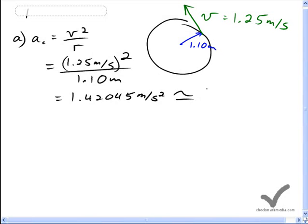We're going to keep lots of digits just because we're going to use this number in part B. And the final answer for part A, though, is 1.42 meters per second squared.